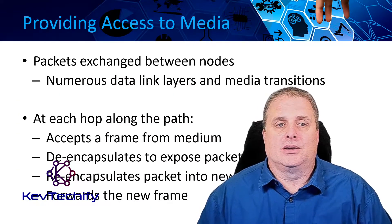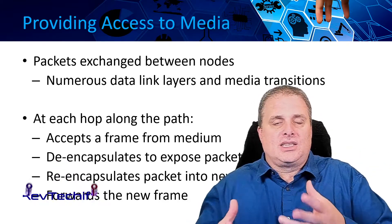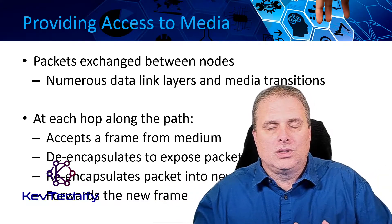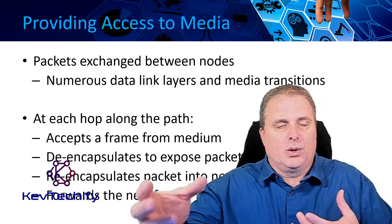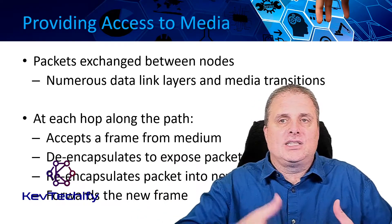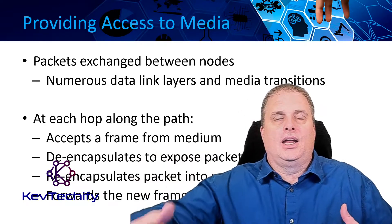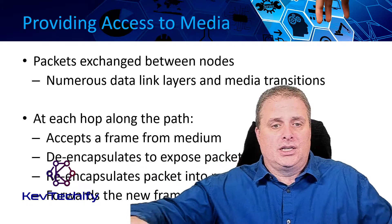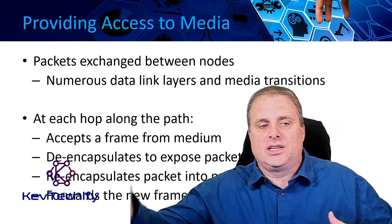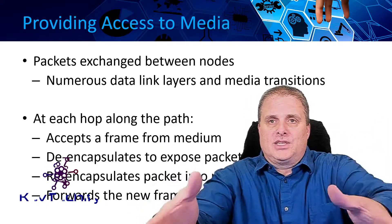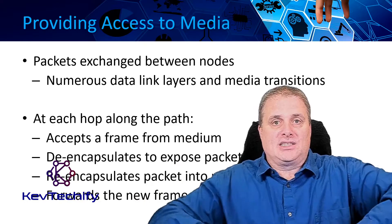Providing access to the media: packets exchanged between nodes go through lots and lots of Datalink. Your data traveling between your client and the server — which could be halfway around the world — has to go through many different networks. Every time it goes through a different network, it goes through the Datalink layer and gets processed and changed. Each time it goes through a router we call that a hop, and that frame comes into the router and the router de-encapsulates it.